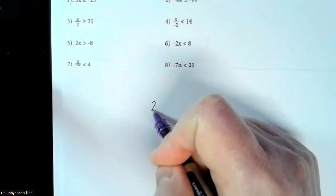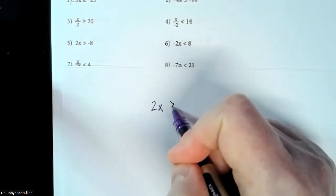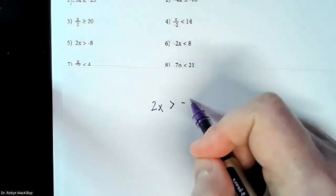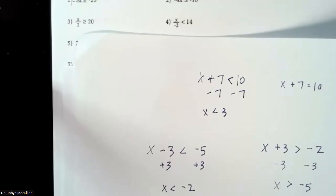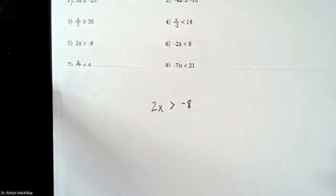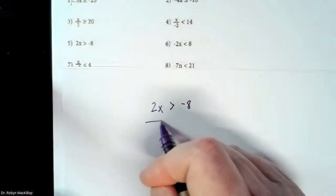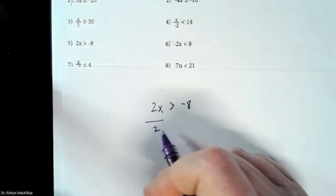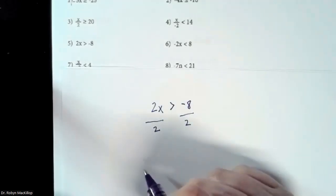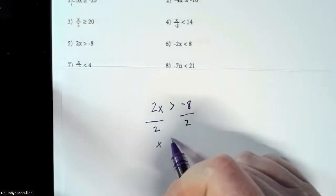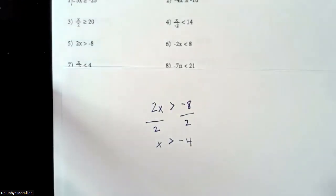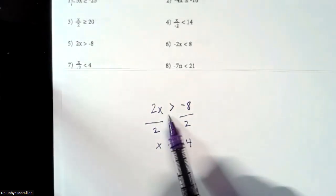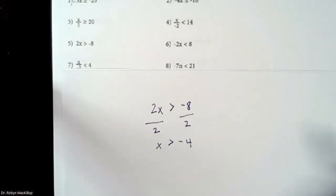Let's start with number 5: 2x is greater than negative 8. The ones we just did were addition and subtraction — x minus 3, x plus 3. This one is a multiplication problem, so the opposite of multiplying is dividing. Divide out that 2, do the exact same thing on this side. 2x divided by 2 is x. Bring down the greater sign. Negative 8 divided by 2 is negative 4. So exactly like what we were doing last week when it had an equal sign.